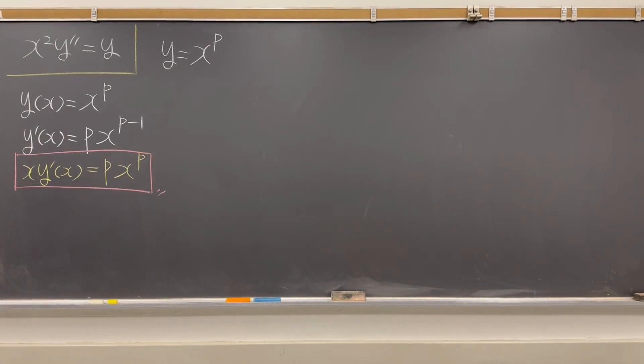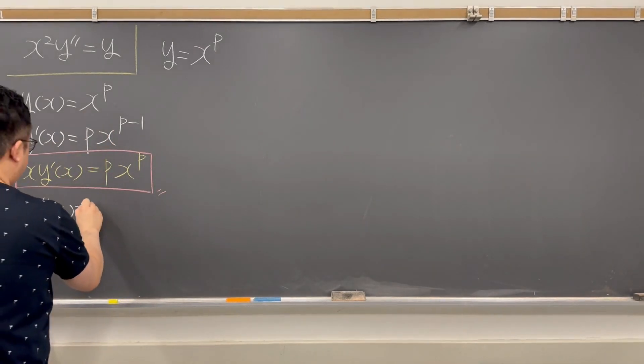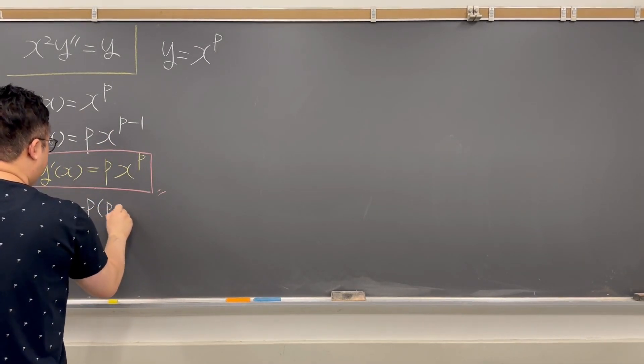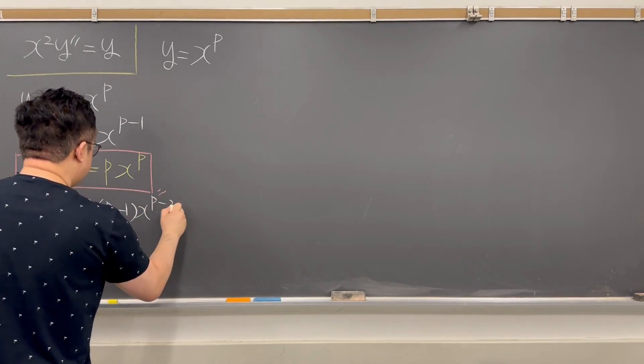Okay, then what if you get your second derivative? So y double prime x is going to be then your p times p minus 1 times x to the power of p minus 2.